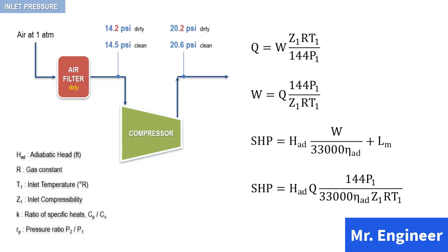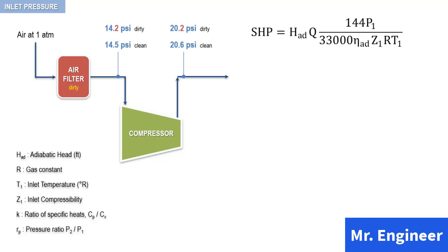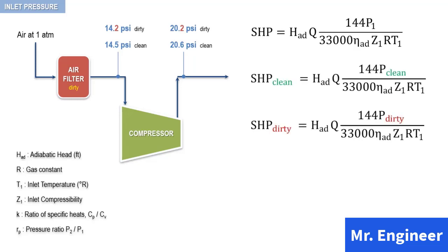This last equation is not strictly valid, because shaft horsepower is composed of gas horsepower and mechanical losses. As a rule of thumb, for centrifugal compressors, the mechanical losses are approximately constant for a given speed, but are in general a small part of the total horsepower. Therefore, ignoring mechanical losses will usually yield a useful approximation. Starting from the general horsepower equation, dividing SHP dirty by SHP clean yields the following useful relationship: shaft horsepower is proportional to the inlet pressure.